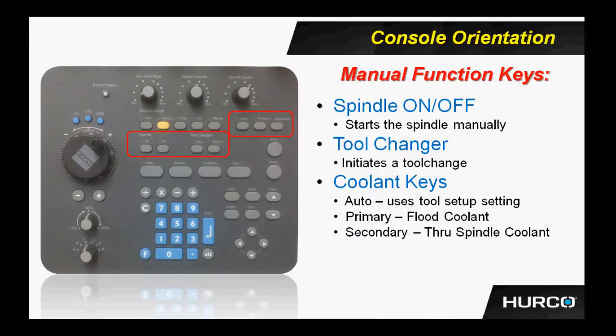Next, we have the manual function keys. In the left-hand red box, we have the spindle on and off. These buttons are going to be used to manually turn the spindle on and off. To the right of that same box, we have the tool changer buttons, which will be used when I'm trying to initiate a tool change manually. We have, in the right red box, the auto, primary, and secondary coolant keys. The auto button will use whatever coolant condition is set up in the tool setup for a particular tool. Primary forces on the flood coolant, and secondary will use either through-the-spindle coolant if the machine is equipped with that option, or it will be used to turn on the air blast if it has been wired in such a manner.